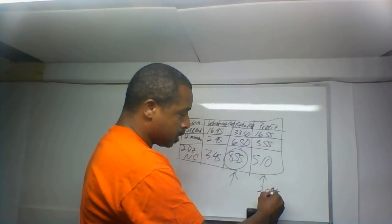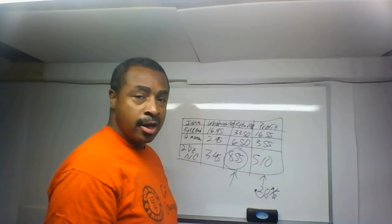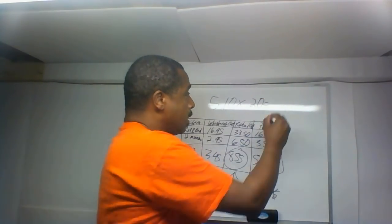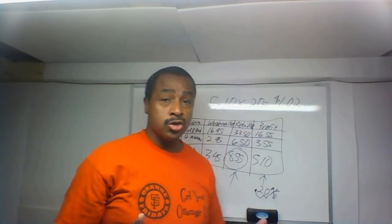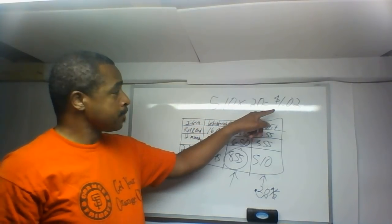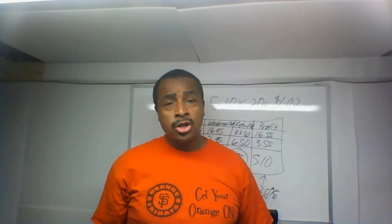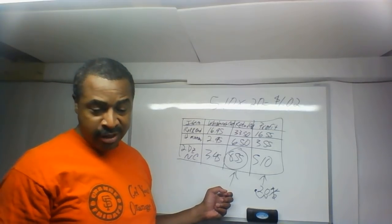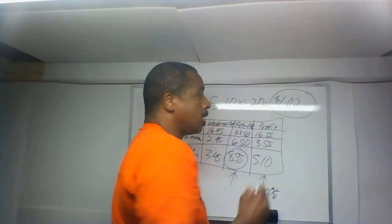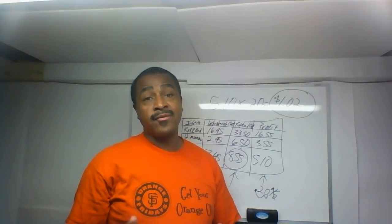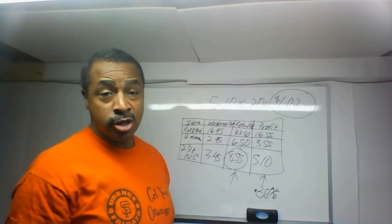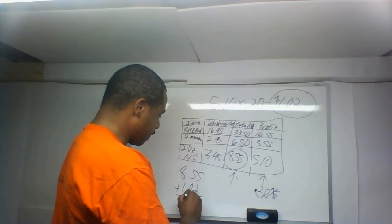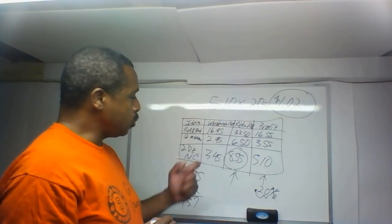So we calculate $5.10 times 0.20, which gives us $1.02. That's the 20% increase in profit. Now we take the current retail cost of $8.55 and add that additional $1.02 that Don wants to make. So $8.55 plus $1.02 gives us the new retail cost for two dozen nightcrawlers.